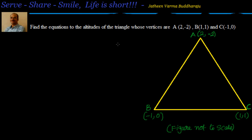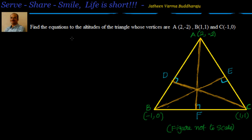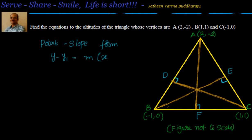Let's see how to find out the equation of the altitudes of the triangle. We have drawn the altitudes CD, BE, and AF. To find the equation of the altitudes, we will be leveraging the point-slope form — the equation of a straight line: y minus y1 equals m times x minus x1. If you know the slope and a point, you can use this form.